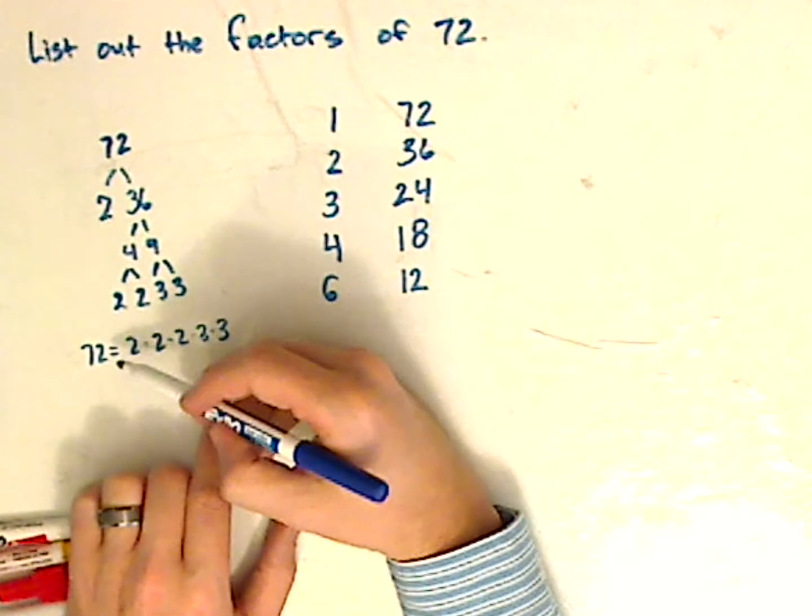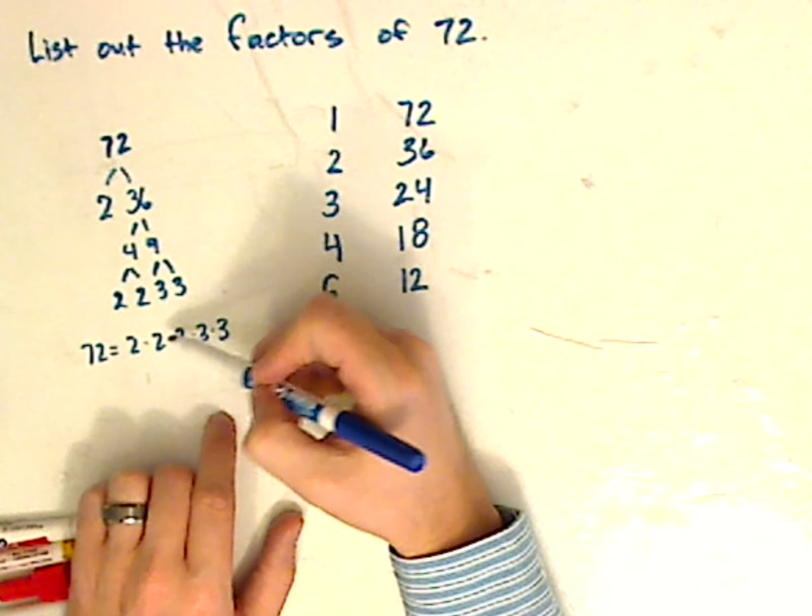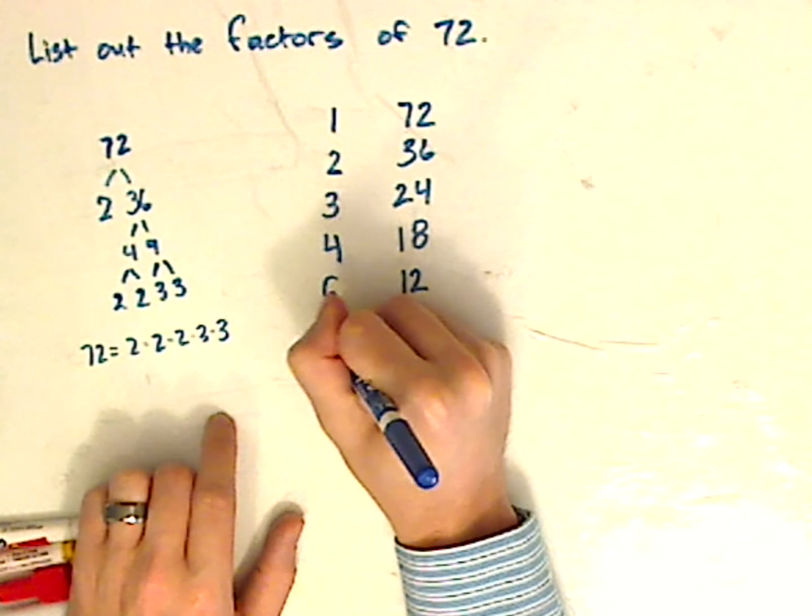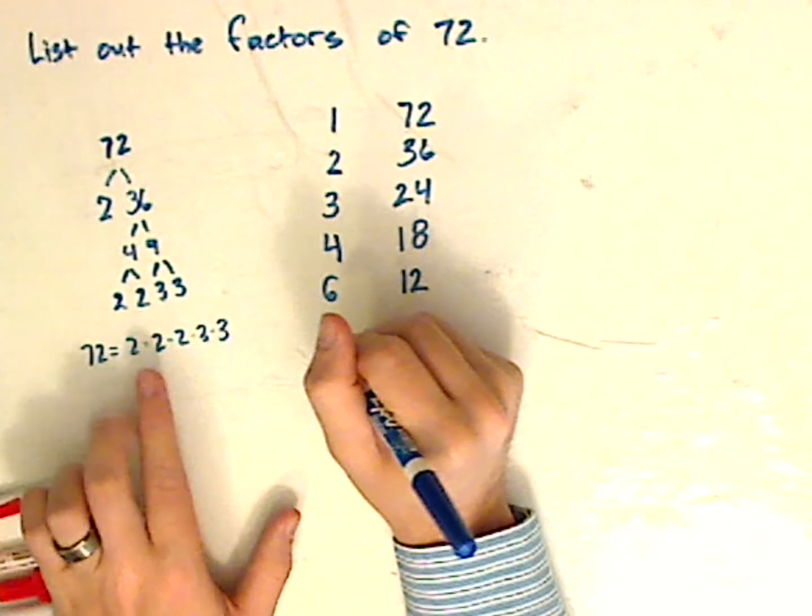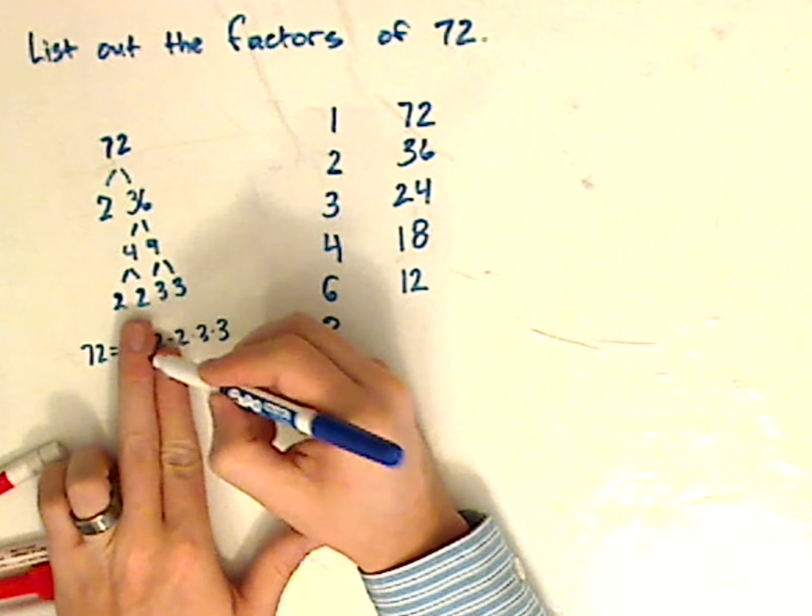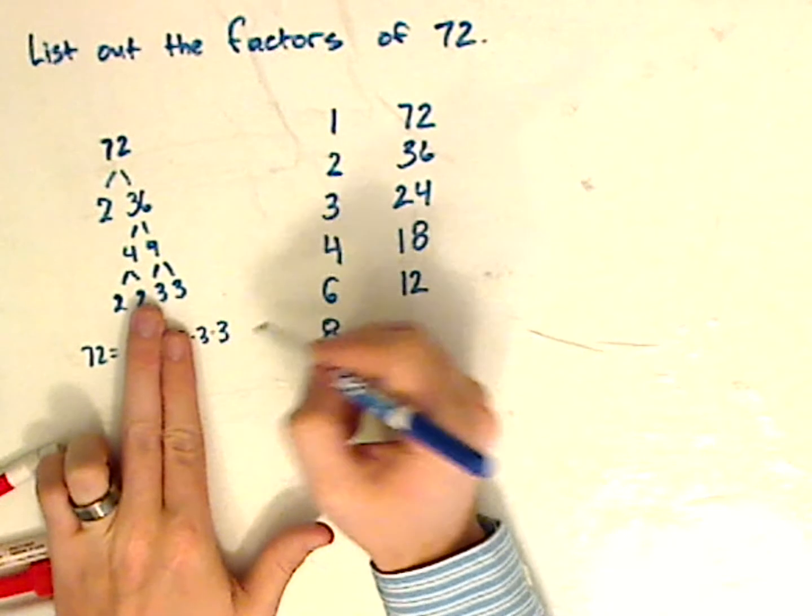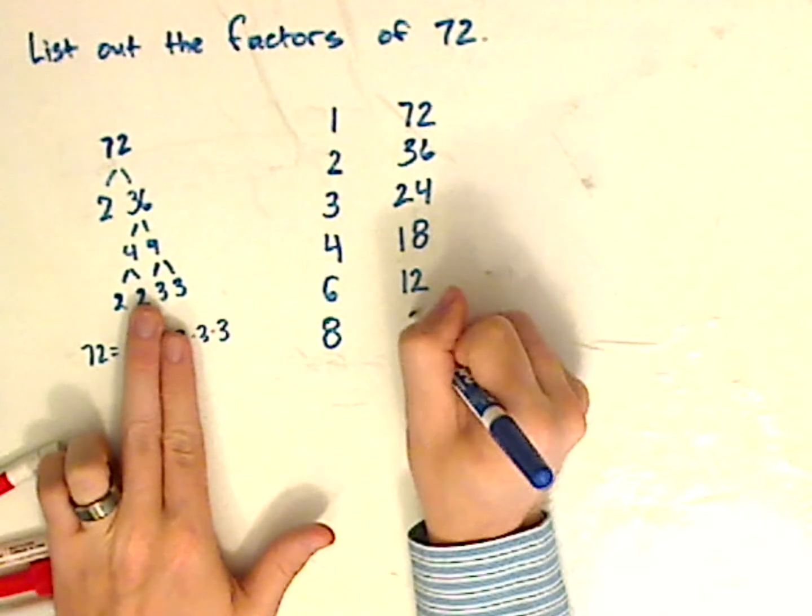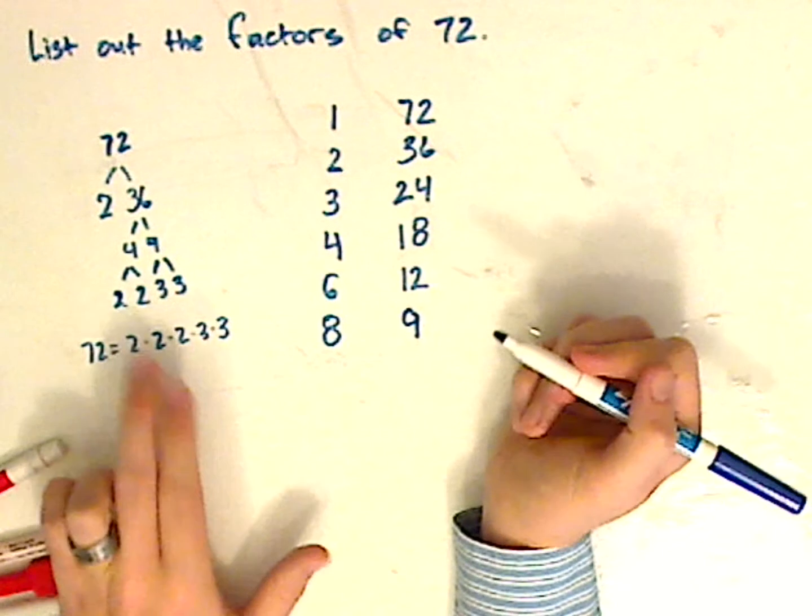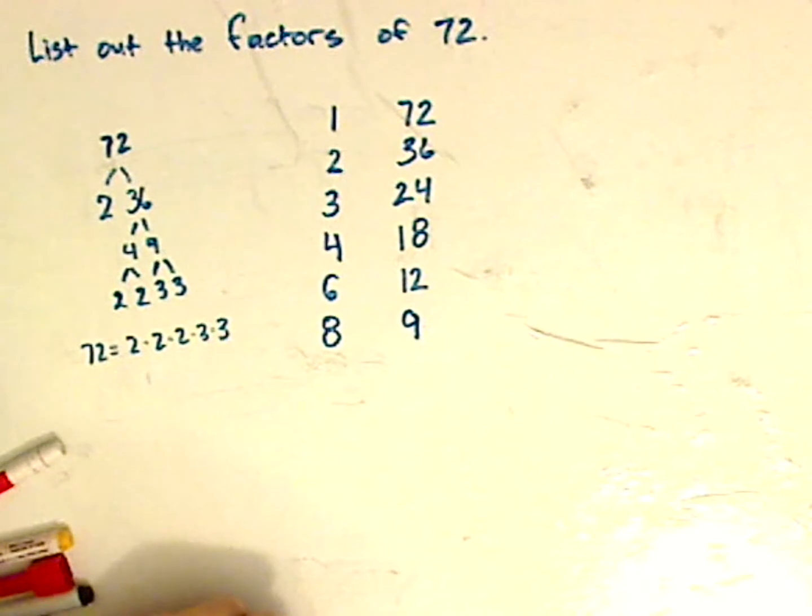And then I can come up with an 8. 2 times 2 times 2, which is 8. So cover up 2 times 2 times 2. That leaves me with 3 times 3, which is 9. And then those are all the factors.